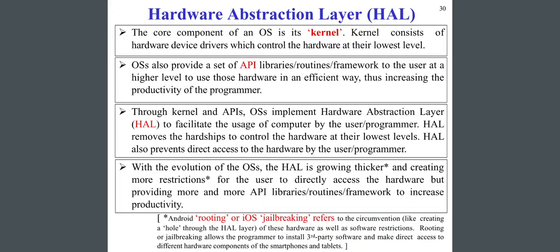Through the kernel and APIs, OSes implement the Hardware Abstraction Layer to facilitate the use of computers by the user or programmer. HAL removes the hardships of controlling the hardware at their lowest levels. HAL also prevents direct access to the hardware by the user or programmer. With the evolution of OSes, the HAL is growing thicker and creating more restrictions.